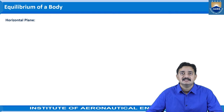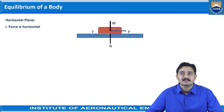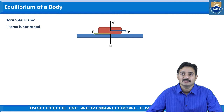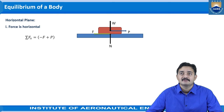First, let us consider the body which is placed on a horizontal plane. Here in this condition, the force applied P is in the horizontal direction — that is, the force P which is applied onto the object is horizontal. After considering all the forces being applied in this system, let us first take the equilibrium condition of the horizontal components of the forces.